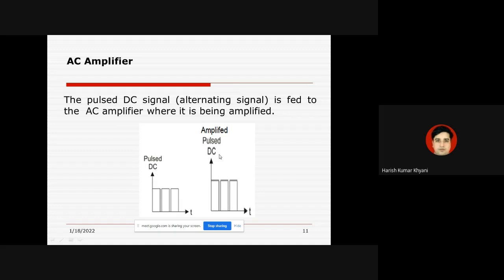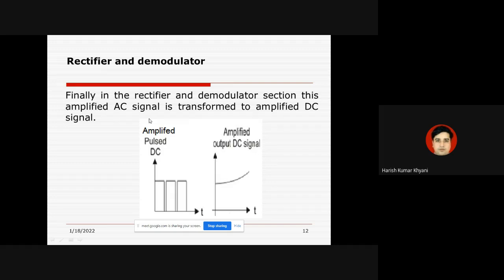Finally, in the rectifier and demodulator section, this amplified AC signal — or pulse DC — is converted into the amplified DC signal, which is our desired output. We have now seen all three components individually; let us see them in combined form.